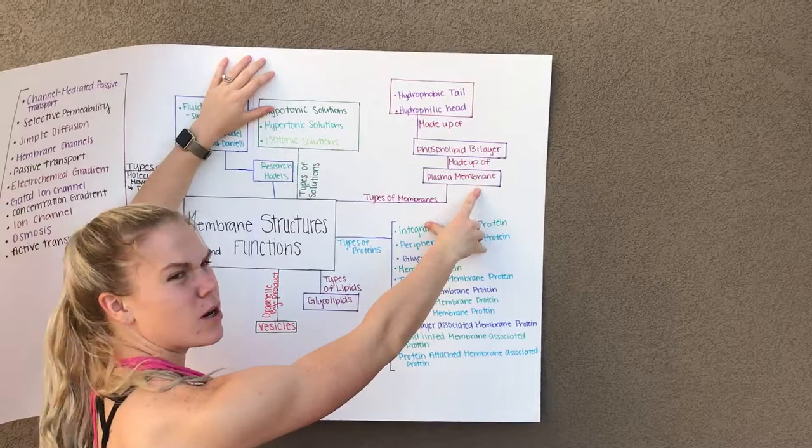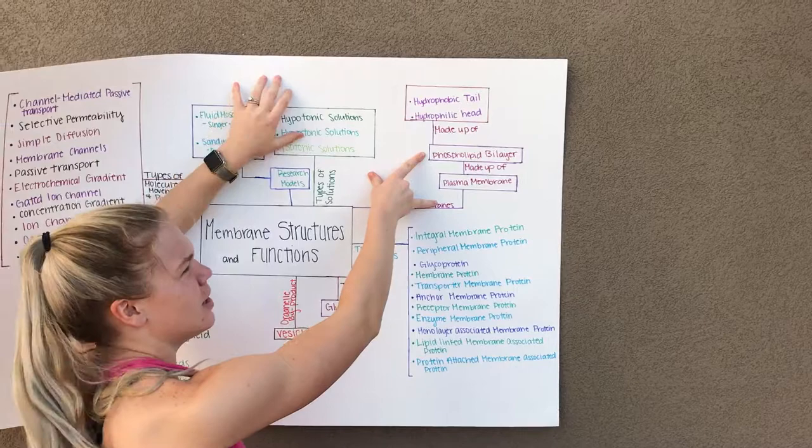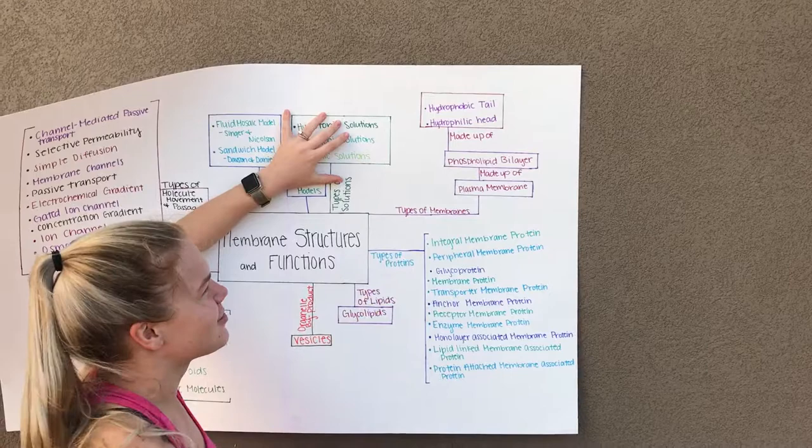And then we have our types of membranes which goes to our plasma membrane and our plasma membrane is made up of a phospholipid bilayer and then that phospholipid bilayer is made up of a hydrophobic tail and a hydrophilic head and that's the rest of our poster.